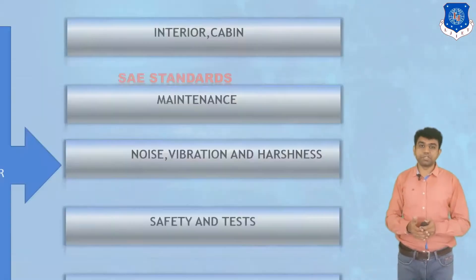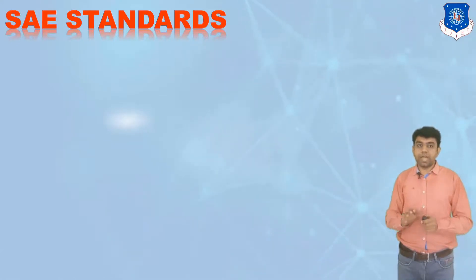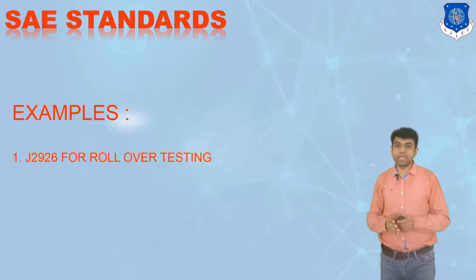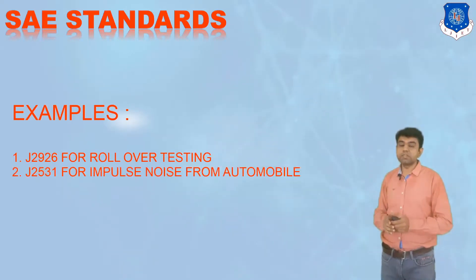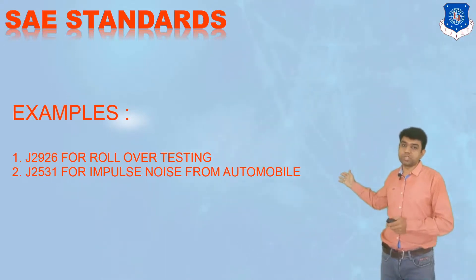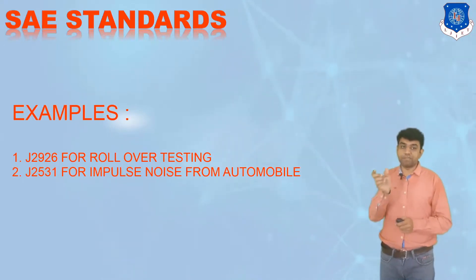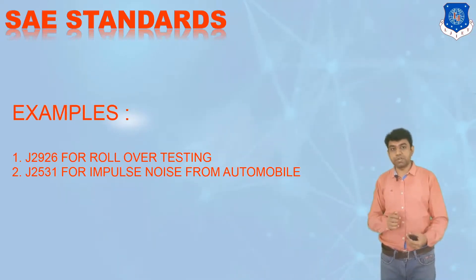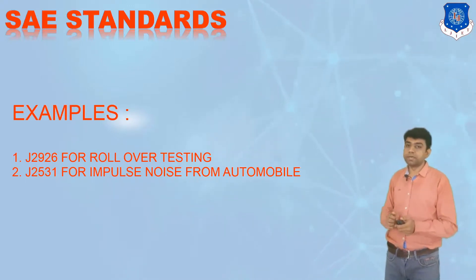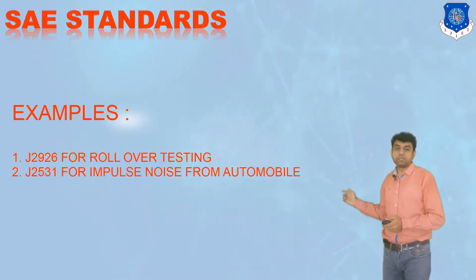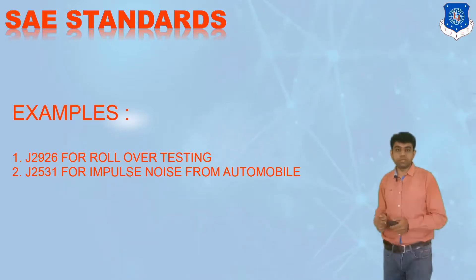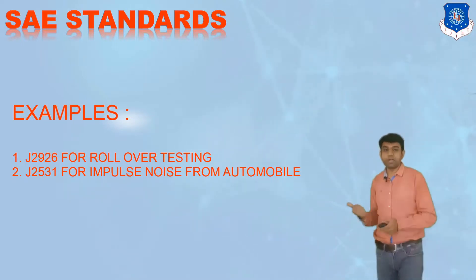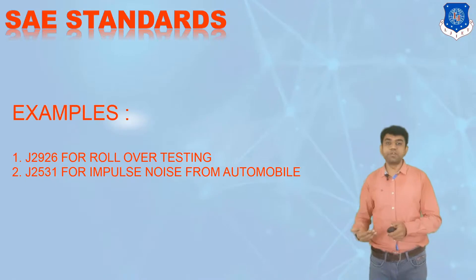I am giving you a brief idea of how standard names appear in the case of SAE. Taking two examples: J2926 is the standard for rollover testing — if you refer to J2926, there are certain guidelines specifying exactly how the rollover test is required to be done. And J2531 is the standard for impulse noise from the automobile. Whenever you are checking for the noise part of the automobile, you need to refer to the J2531 series and follow that particular guideline whenever testing is done as per that norm.